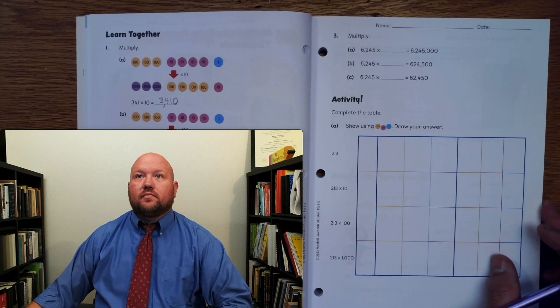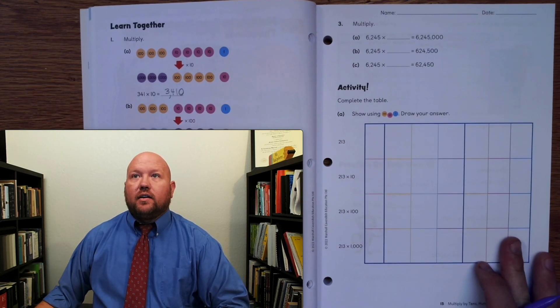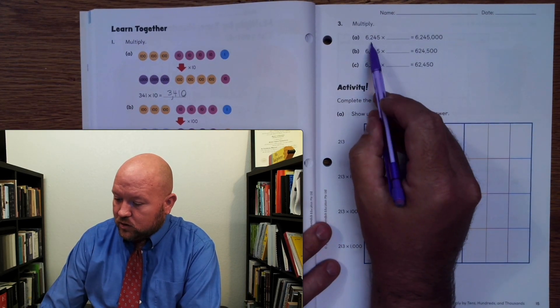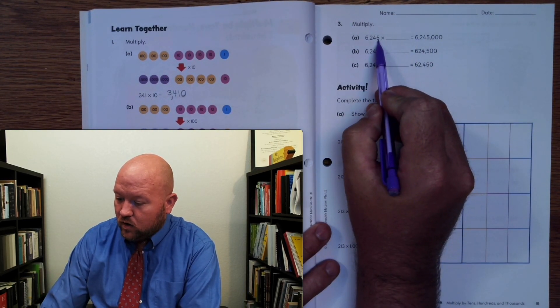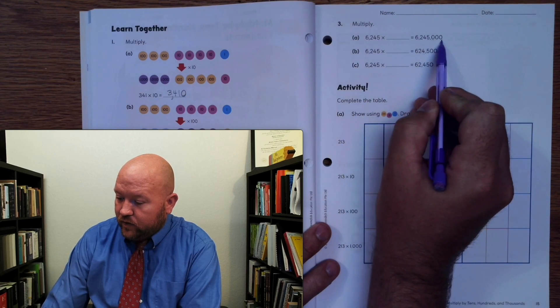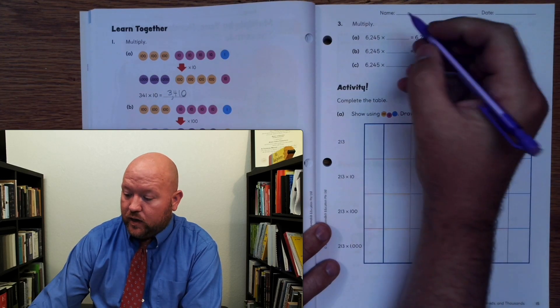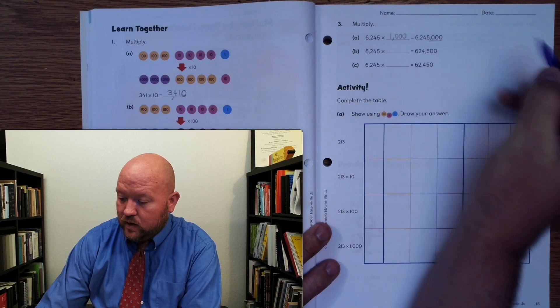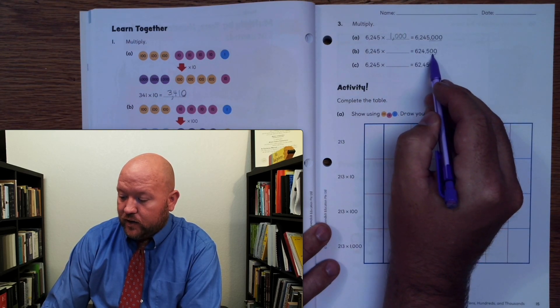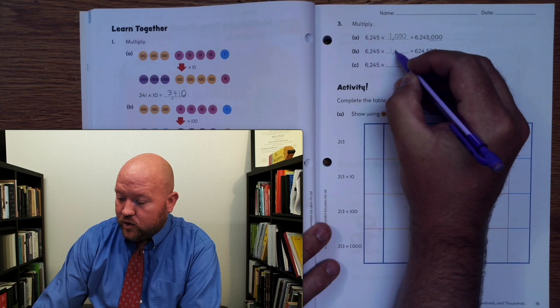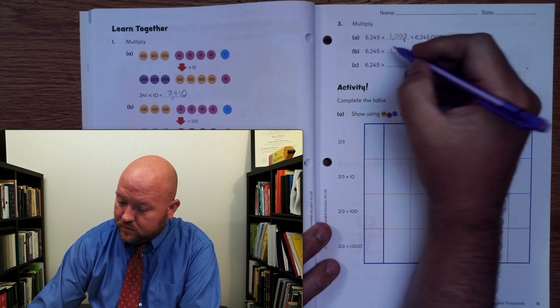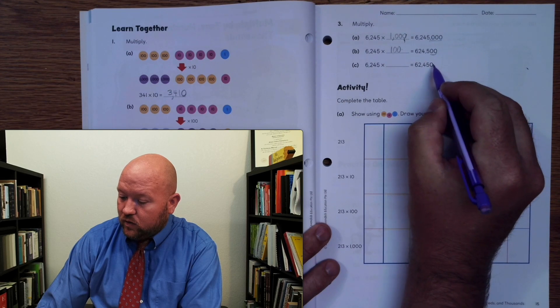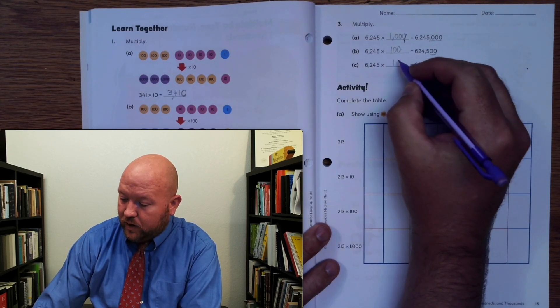Now let's look at page 15. What would I need to multiply this by to get this number? Here I have three zeros, so I moved it over three place values — I'd have to multiply it by 1,000. Here I slid everything over two place values, so I'd need to multiply it by 100. And here I moved it over one place value, so I'd multiply it by 10.